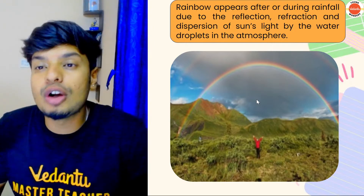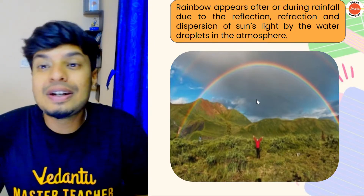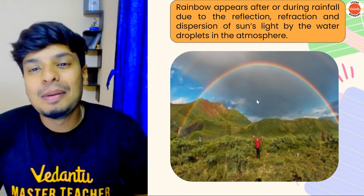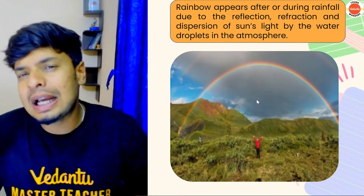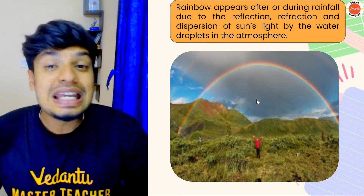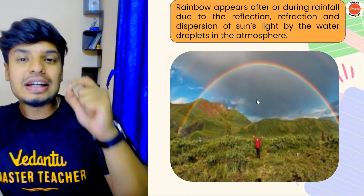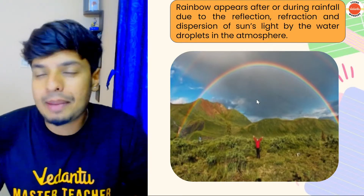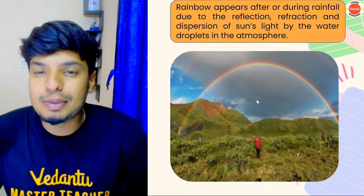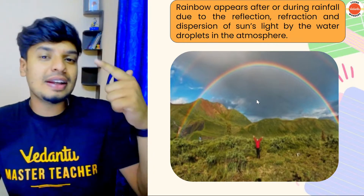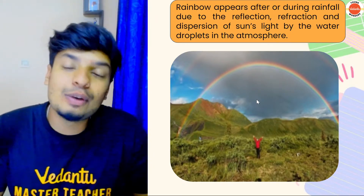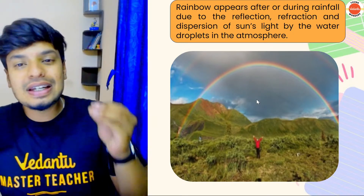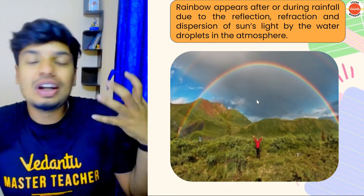Rainbows appear after or during rainfall due to the reflection, refraction, and dispersion of the sunlight by the water droplets in the atmosphere. Whenever light enters into a different medium, refraction — bending of light — happens. There is also reflection that happens inside the raindrop, and when the light comes out of the raindrop, it is already dispersed into all its seven colors.